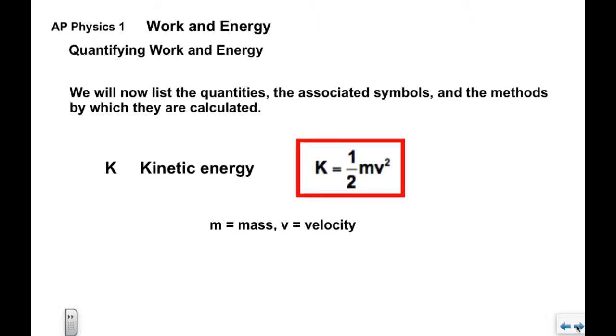Now we're going to look at the quantities, the symbols, and the methods by which each is calculated. Capital K is kinetic energy. This is one-half mv squared. We know kinetic energy already is the energy of motion.